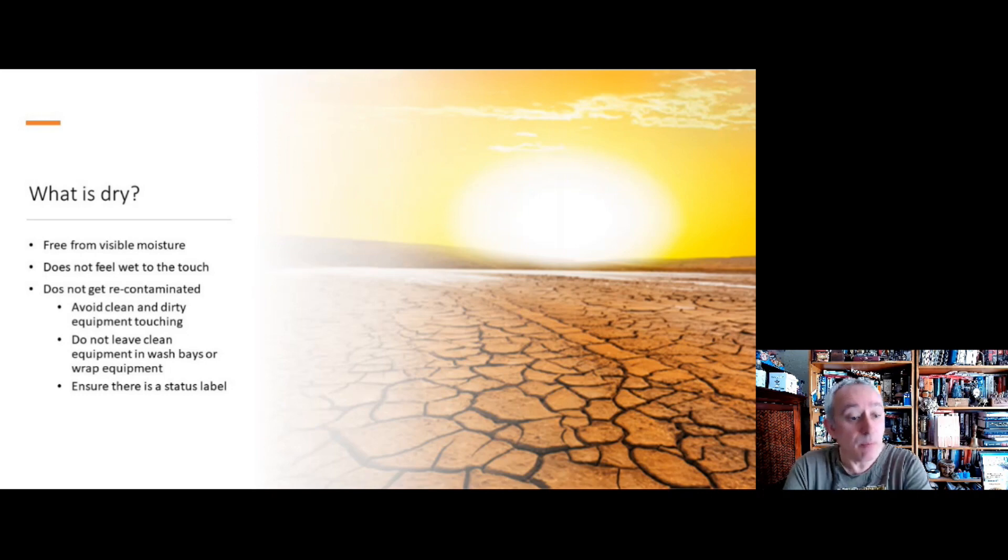It's important that things are dry when they need to be dry. This is for vessels and for items coming out of autoclaves. Dry is free from visible moisture. That means you cannot see any evidence of moisture at all. If you were to touch the surface, you would feel no dampness or wet at all. We are using an absolute term. Either something is dry or it is not dry.